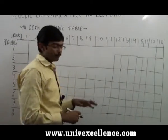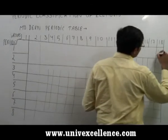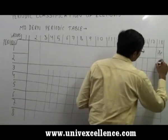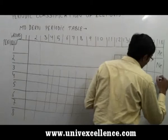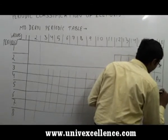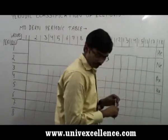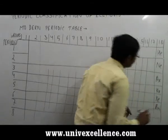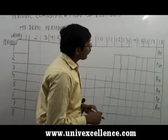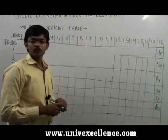So the 18th group was kept for the inert gases, and inert gases were helium, neon, argon, krypton, xenon, and radon. Now why they were kept into the 18th group was a question.